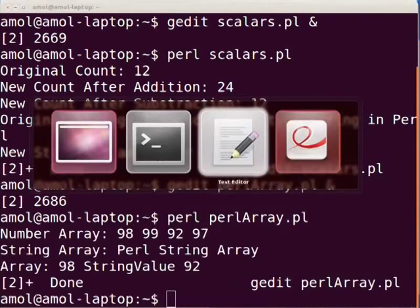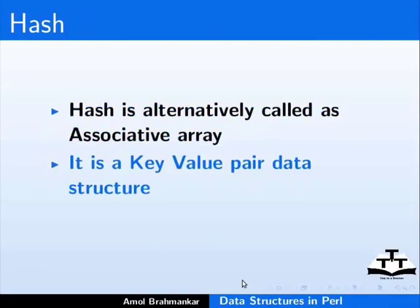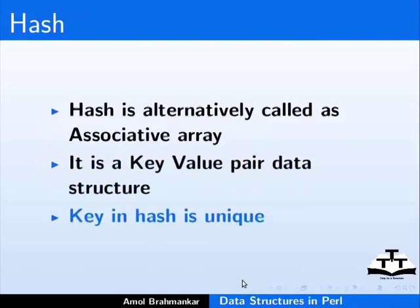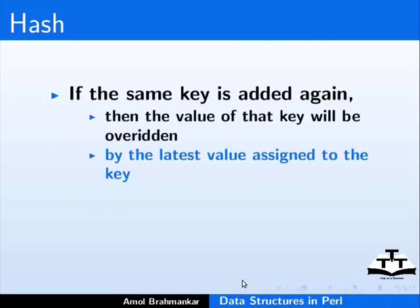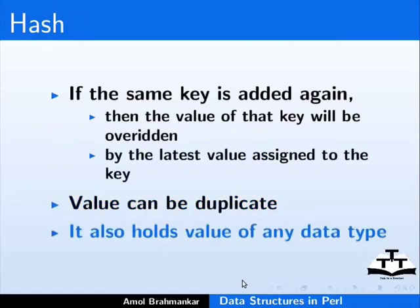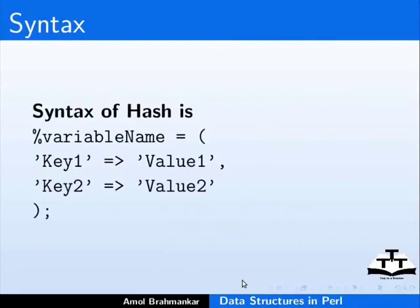Now let us look at hash data structure in Perl. Hash is alternatively called as associative array. It is a key-value pair data structure. Key in hash is unique. If the same key is added again then the value of that key will be overridden by the latest value assigned to the key. Value can be duplicate. It also holds value of any data type. The syntax of hash is: %variableName = ('key_name' => value, ...);